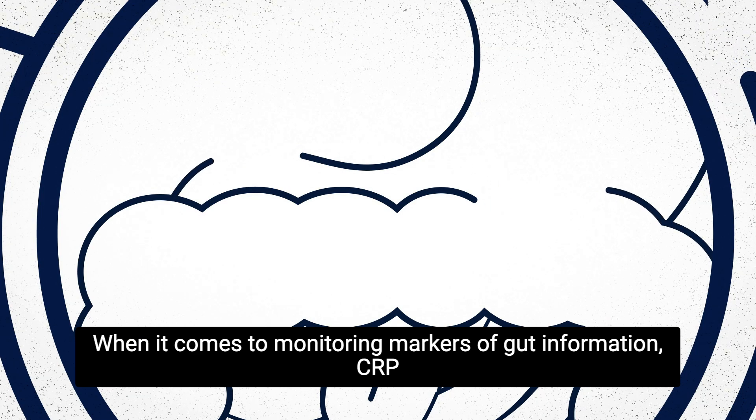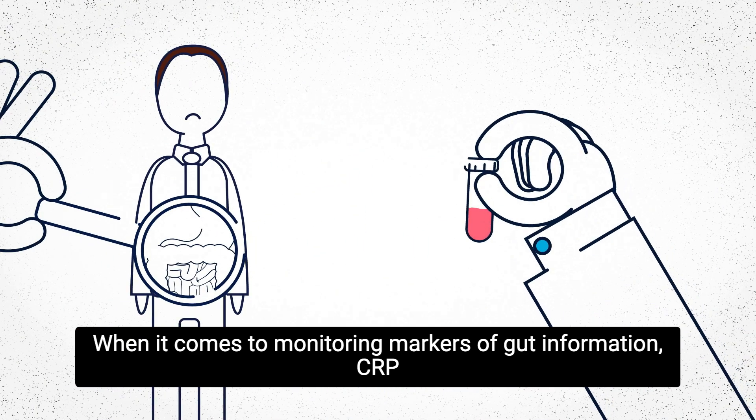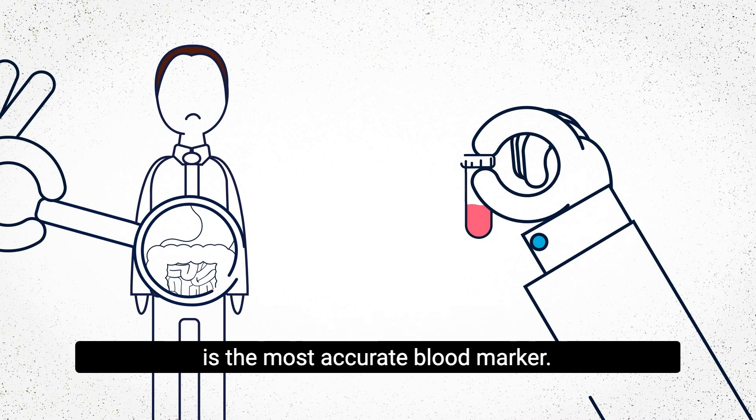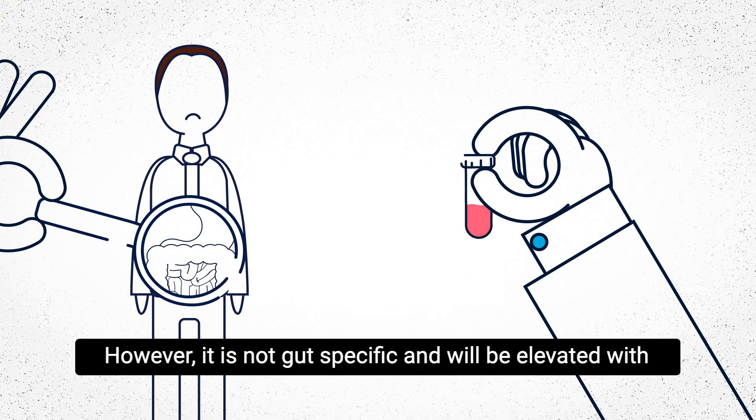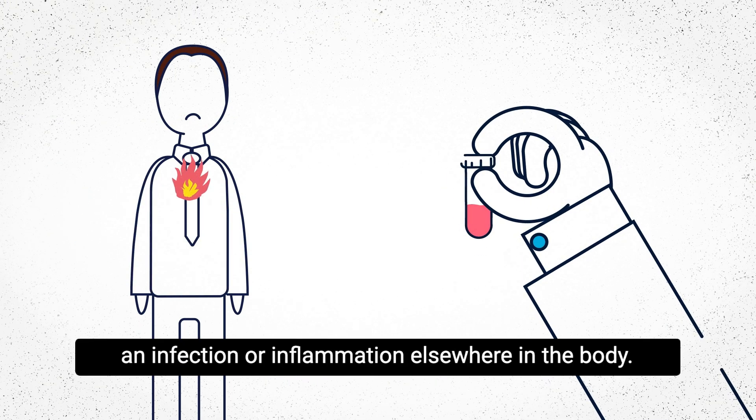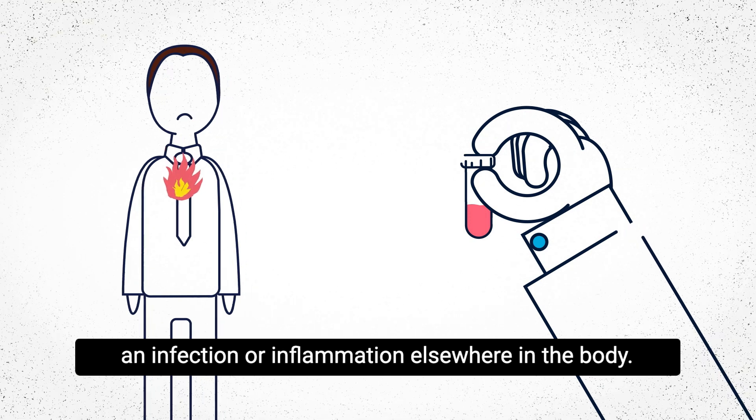When it comes to monitoring markers of gut inflammation, CRP is the most accurate blood marker. However, it is not gut-specific and will be elevated with an infection or inflammation elsewhere in the body.